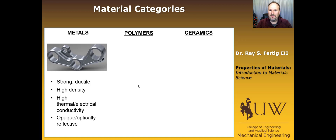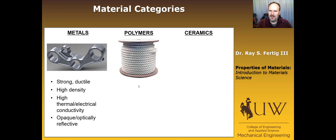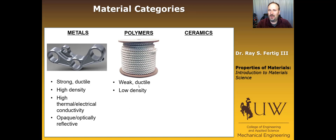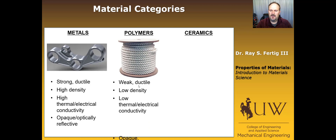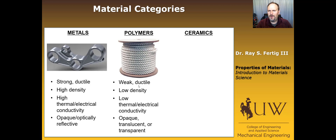Polymers have another set of properties. Here I'm showing a nylon rope. In general, polymers are weak and relatively ductile — though we can make brittle polymers, and there are small classes like armor materials where higher strength is achieved. They are typically low density, which makes them useful in many applications, and they have low thermal and electrical conductivity. They can vary in optical properties: opaque, translucent, or transparent, like polycarbonate.